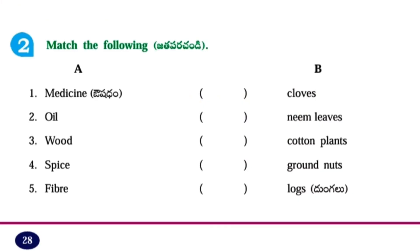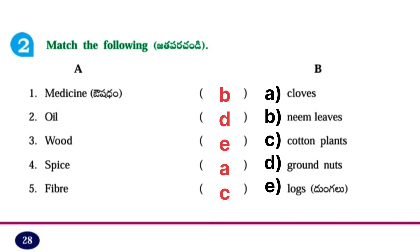Second one, match the following. Medicine — B — neem leaves. Oil — D — ground nuts. Wood — E — logs. Spice — A — cloves. Fiber — C — cotton plants. You have to write A, B, C, D, E on the B side.